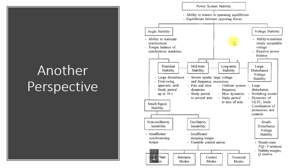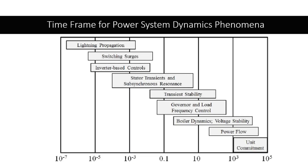In terms of timing, power system dynamics — or RMS stability — spans from milliseconds up to about 10, 15, or 30 seconds. Controls like the generator response are involved in this range. For example, during a short circuit, the short-circuit impedance changes with respect to time; we consider how the system and controls respond within the first few cycles and onward.